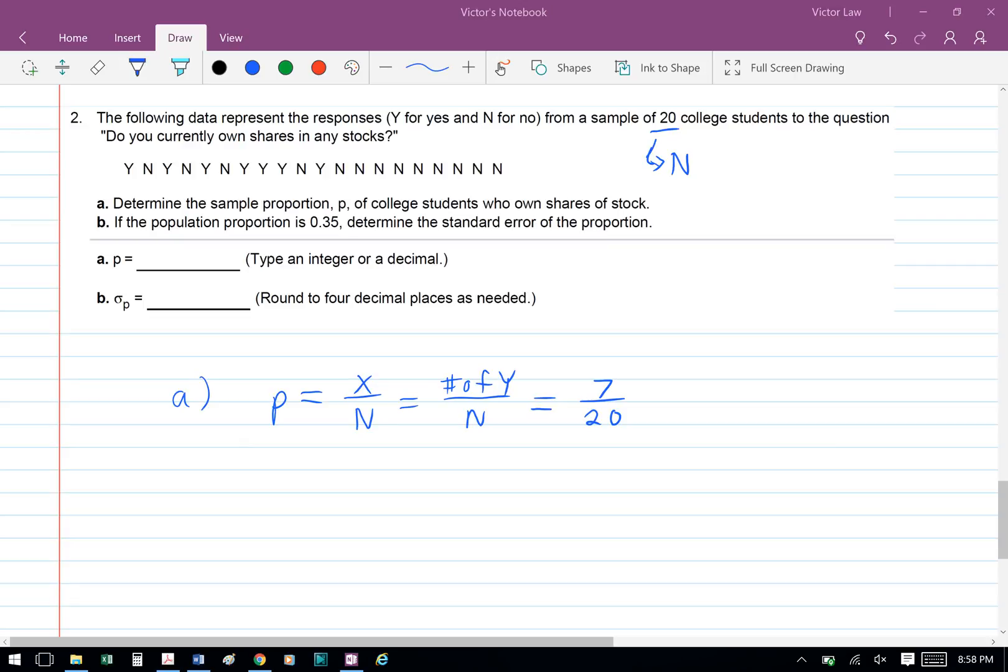x is the number of yes responses, and n is the sample size, so we have 7 divided by 20, which is 0.35.